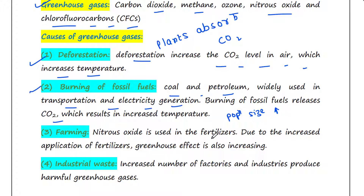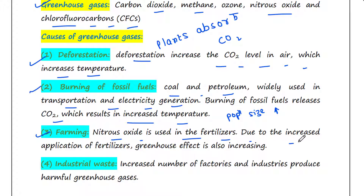This ultimately results in increased temperature. The next cause is farming. Nitrous oxide is used in fertilizers, and nitrous oxide is a greenhouse gas. So due to the increased application of fertilizers, the greenhouse effect is also increasing.